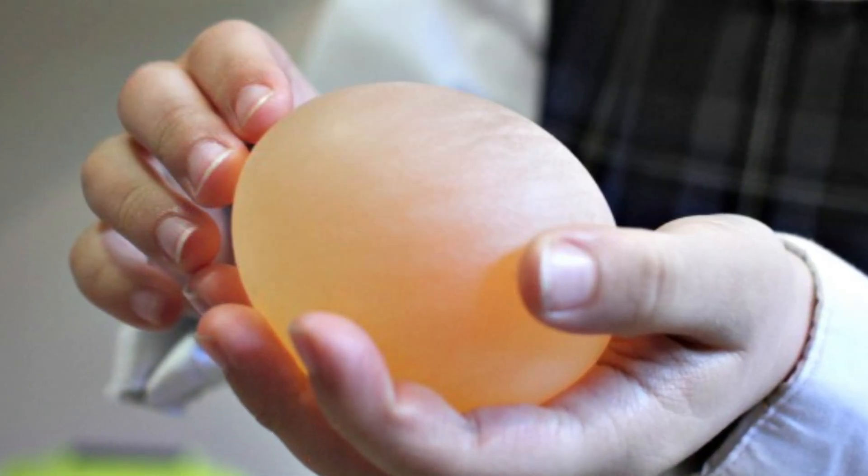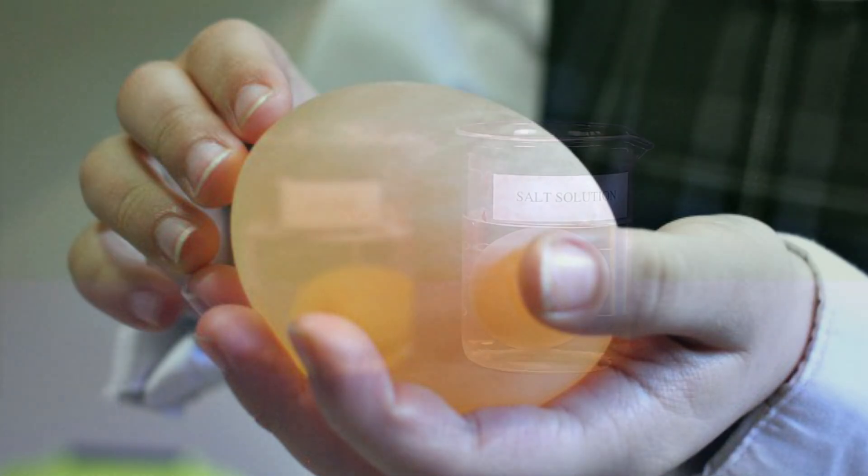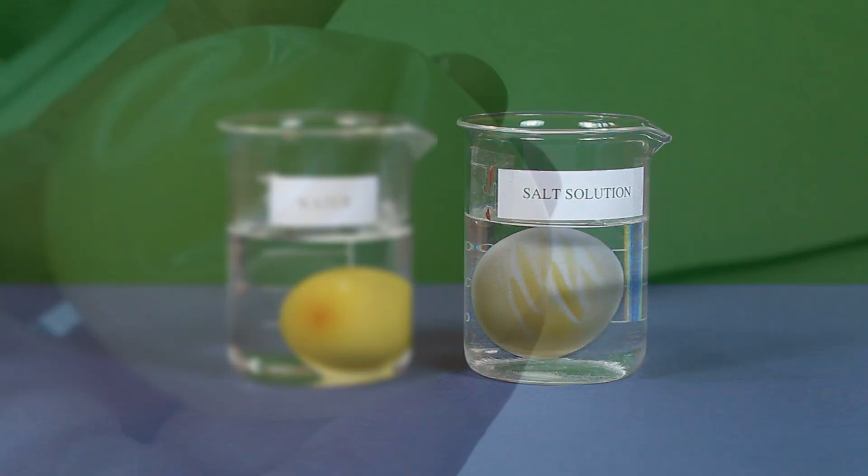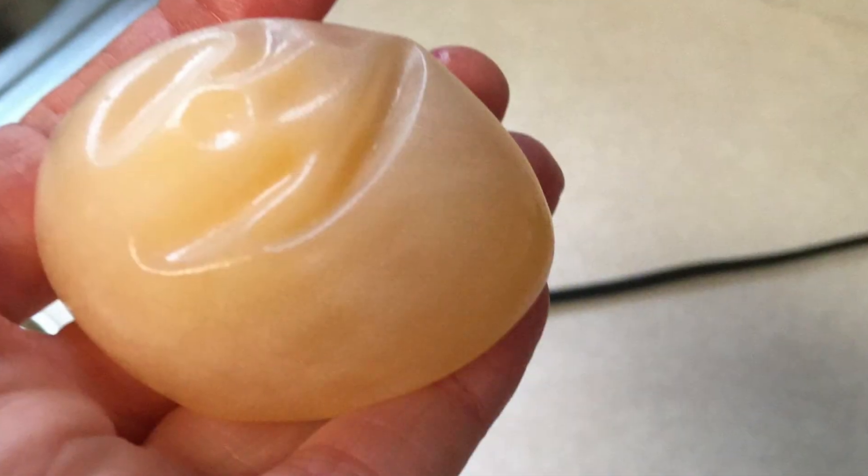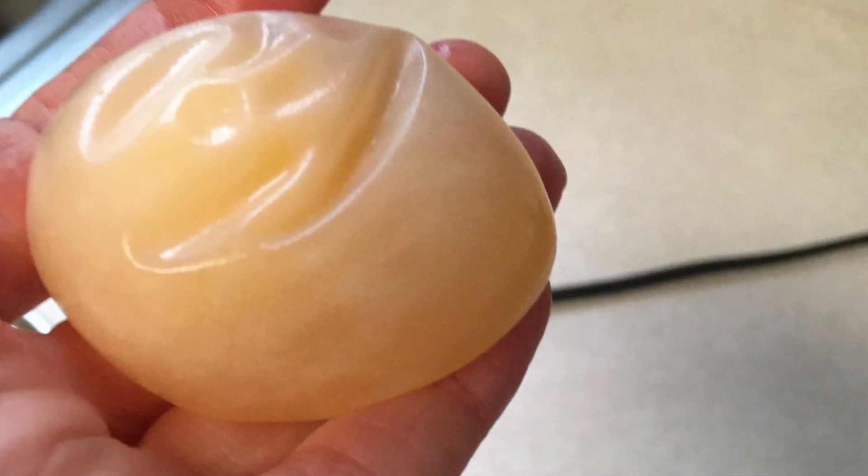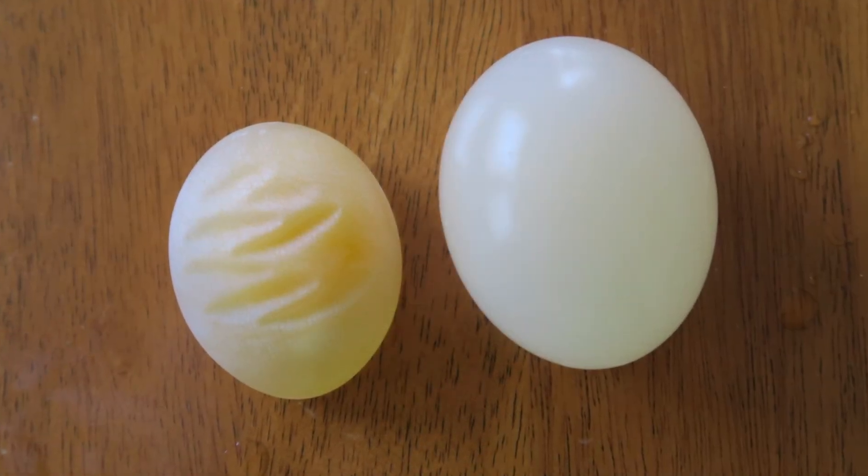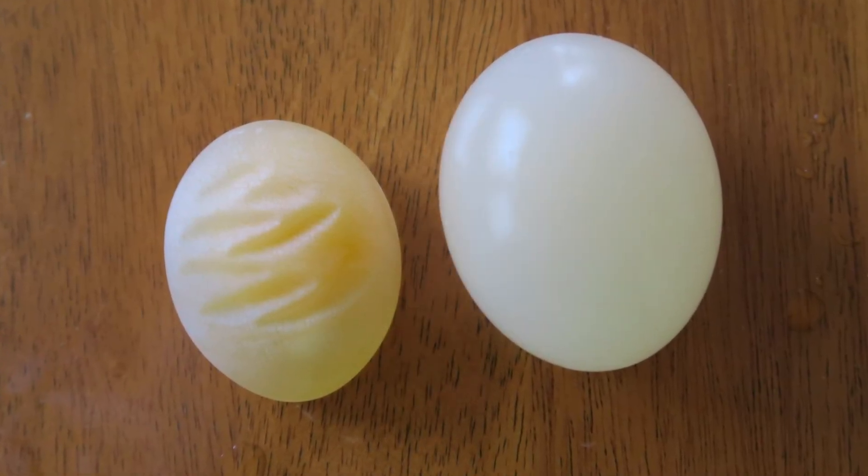The de-shelled egg when placed in a salt solution loses water and results in the shrinkage of the egg due to exosmosis. That is, the water comes out from the de-shelled egg into the salt solution.